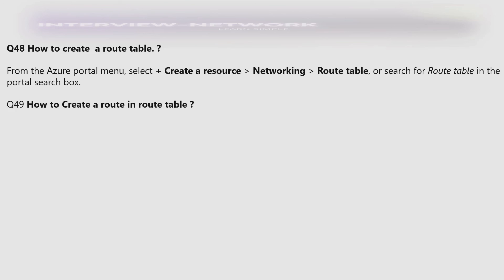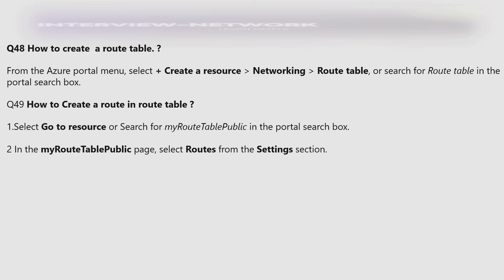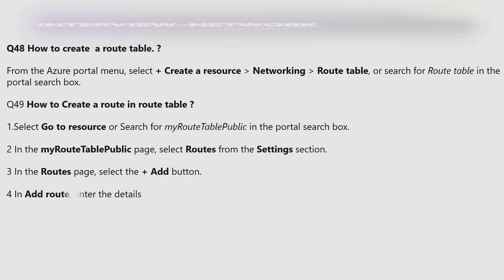How to create a route in a route table? Select 'Go to resource' or search for your route table in the portal search box. In the route table page, select 'Routes' from the settings section. In the routes page, select the '+Add' button and then enter the details in 'Add Routes.'